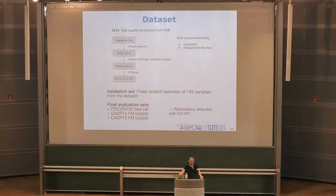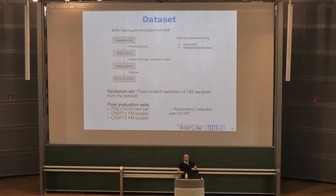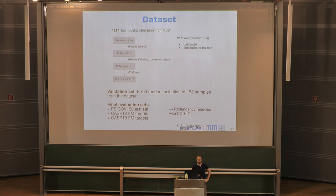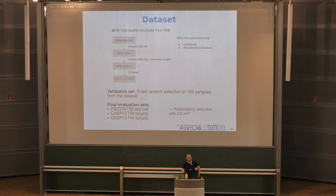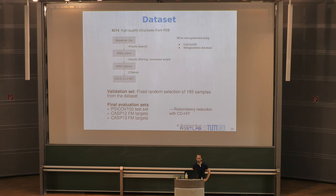Now let me talk about a more realistic approach from my master's thesis — something implementable by a smaller lab. For data, we had just over 4,000 high-quality PDB structures with constraints: single chains only, no metals, minimum resolution requirements. Starting from FASTA files, we used HH-suite to generate multiple sequence alignments, filtered them to remove redundancy, and used CCMPRED to compute evolutionary coupling scores, producing L × L × 441 input tensors.